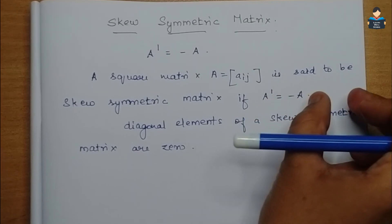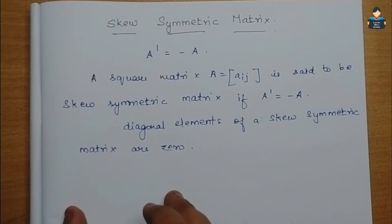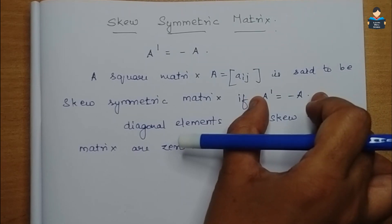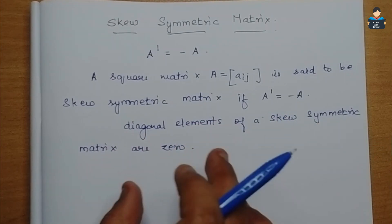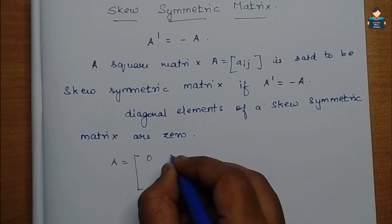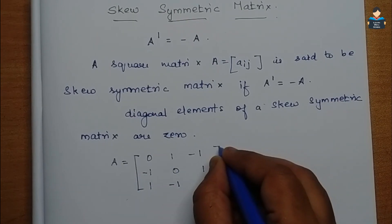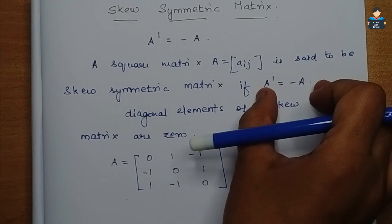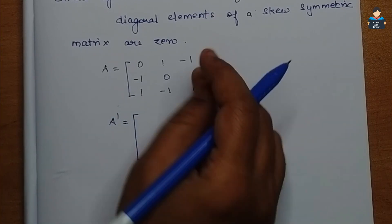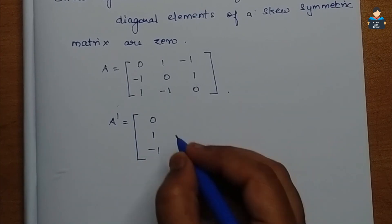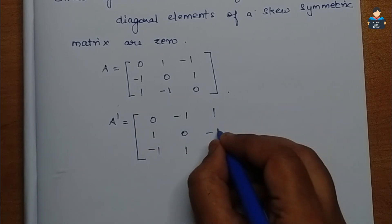Now for the skew-symmetric matrix. Matrix A = [0, 1, -1; -1, 0, 1; 1, -1, 0]. First, find A transpose by making rows into columns: row 1 becomes [0, 1, -1], row 2 becomes [-1, 0, 1], row 3 becomes [1, -1, 0].